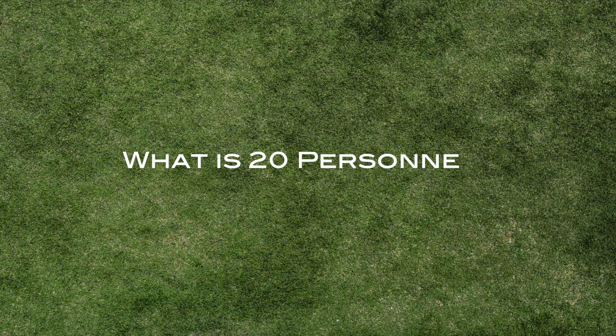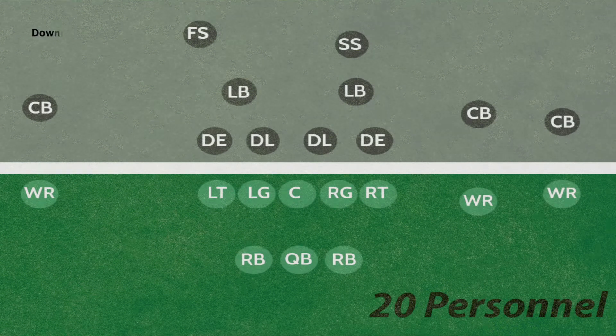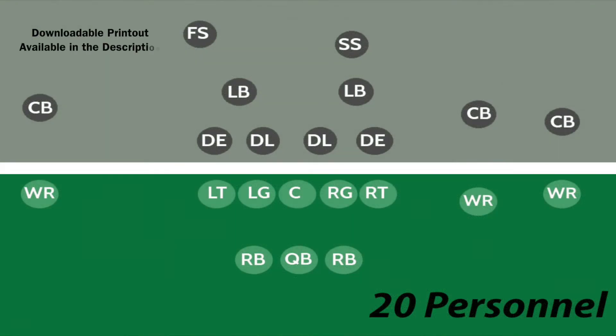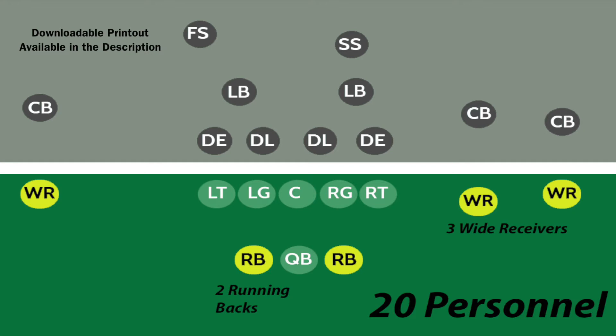So what is 20 personnel? 20 personnel is when the skilled position players on the offense are made up of two running backs, three wide receivers, and zero tight ends.